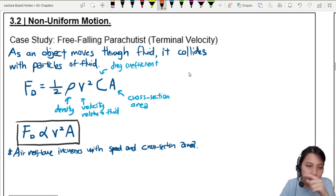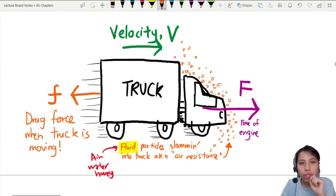Alright. Last note. Notice something interesting about the truck. When the truck moves to the right, the drag force is in the left. So this drag force will always oppose the velocity.